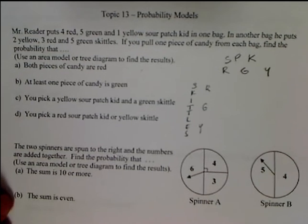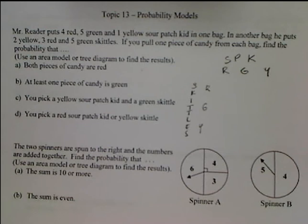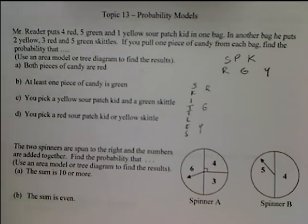For this one, we have to read the questions carefully so it doesn't get confused with the other kinds of probability problems. Mr. Reader puts four red, five green, one yellow Sour Patch Kids in one bag, and in another bag he puts two yellow, three red, five green Skittles. You're going to pull one piece of candy from each bag. We're actually pulling two different things, so we have to separate them out, and I'm going to use an area model to demonstrate this.